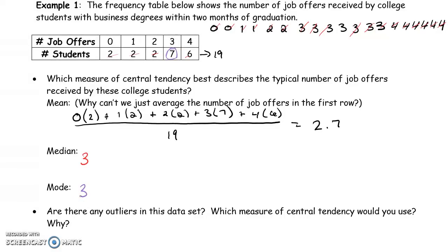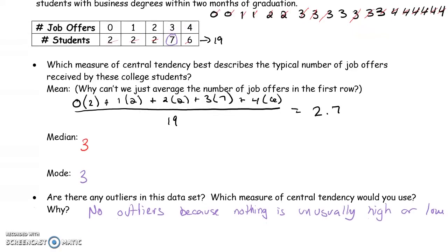As we look at the data set, we have either zero, one, two, three, or four. Because that's the only options, not any one of those seem unusually high or unusually low for the data. I'd say that there's no outliers in this case. So for that reason, really any of the three measures of central tendency would work. But because there's no outliers, I typically like to use the mean.